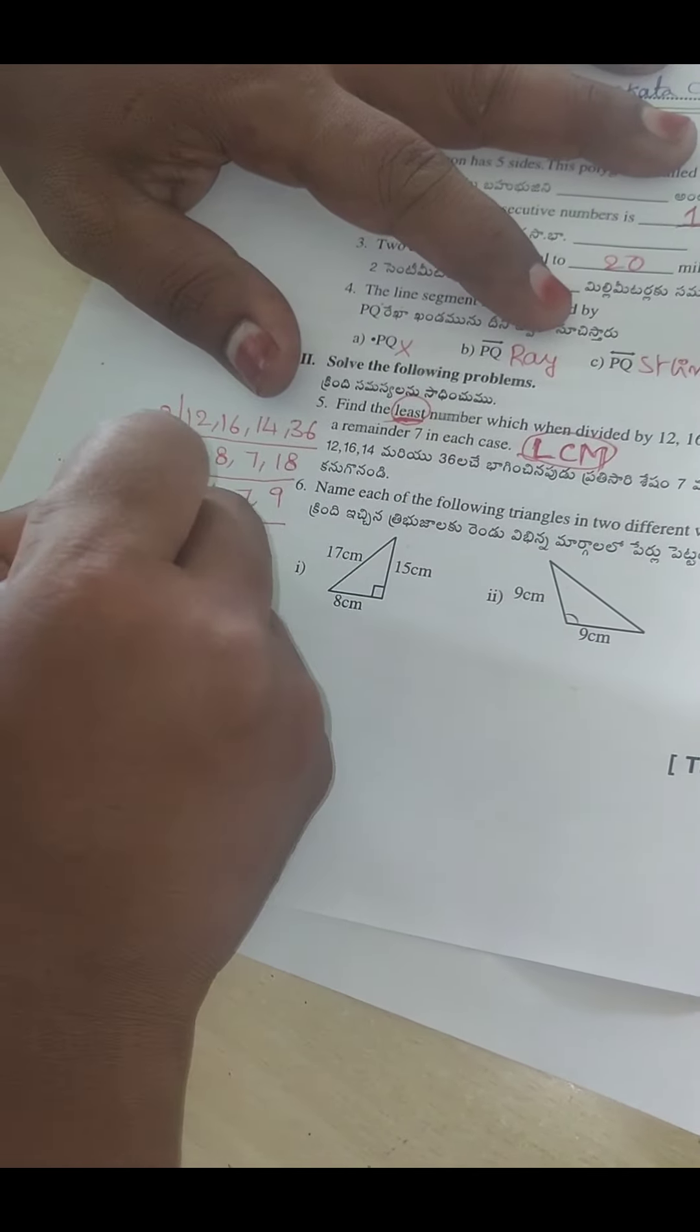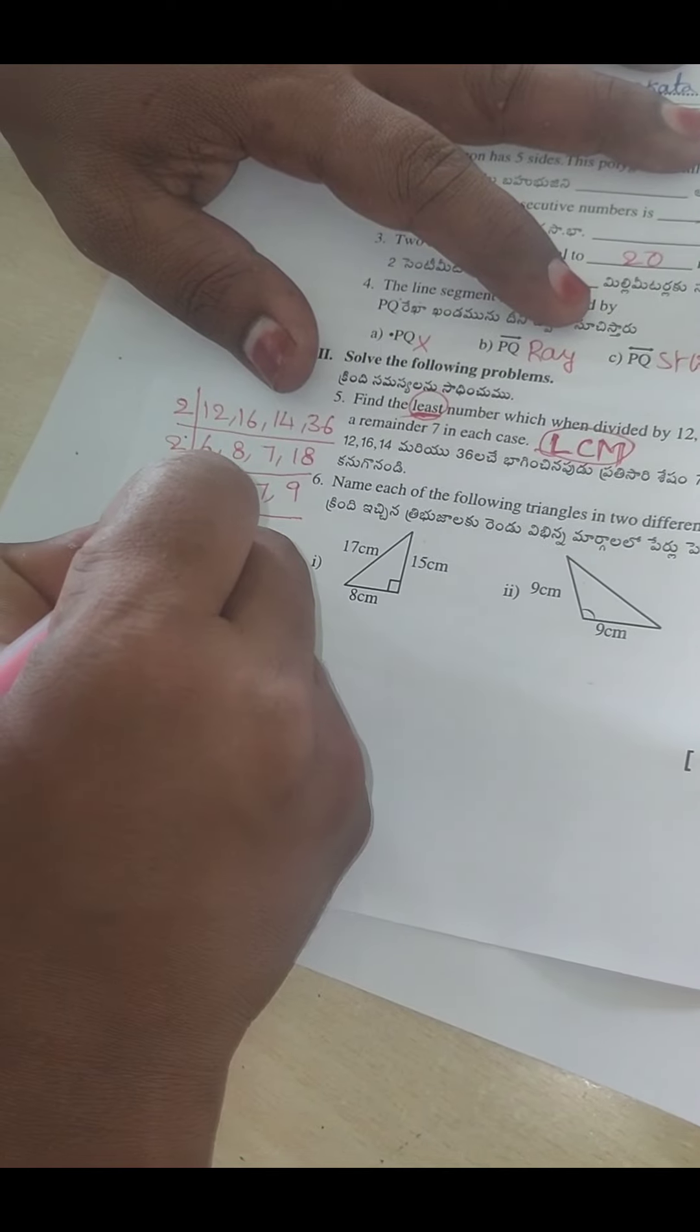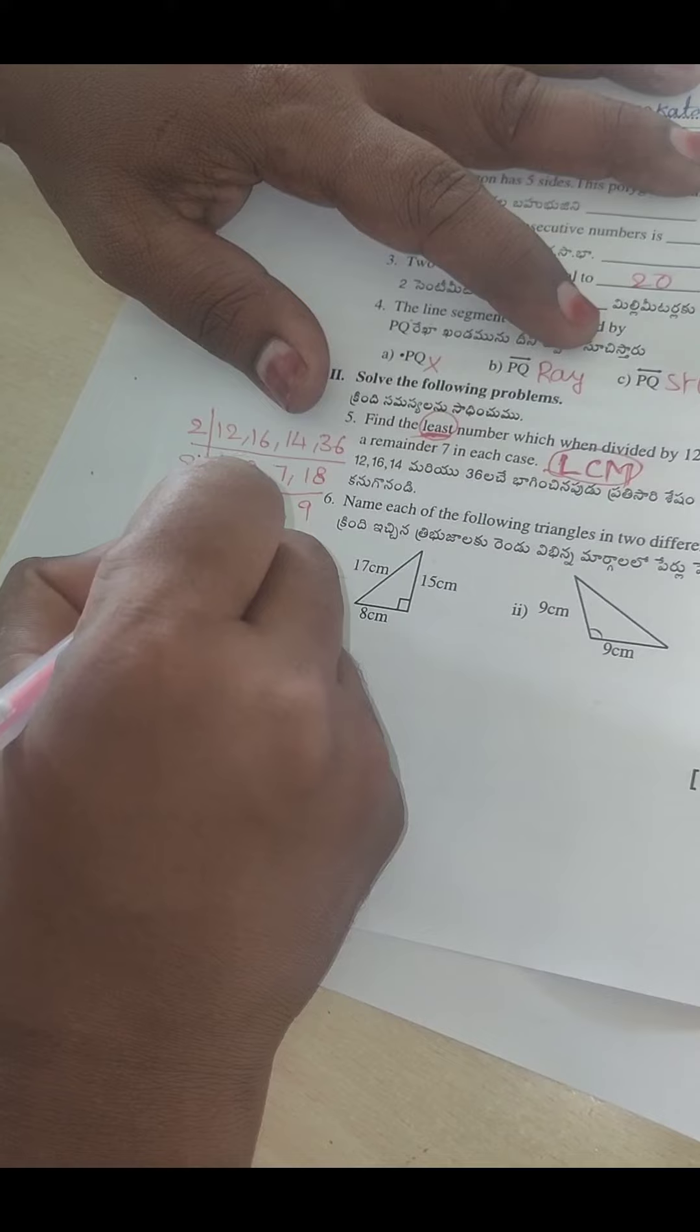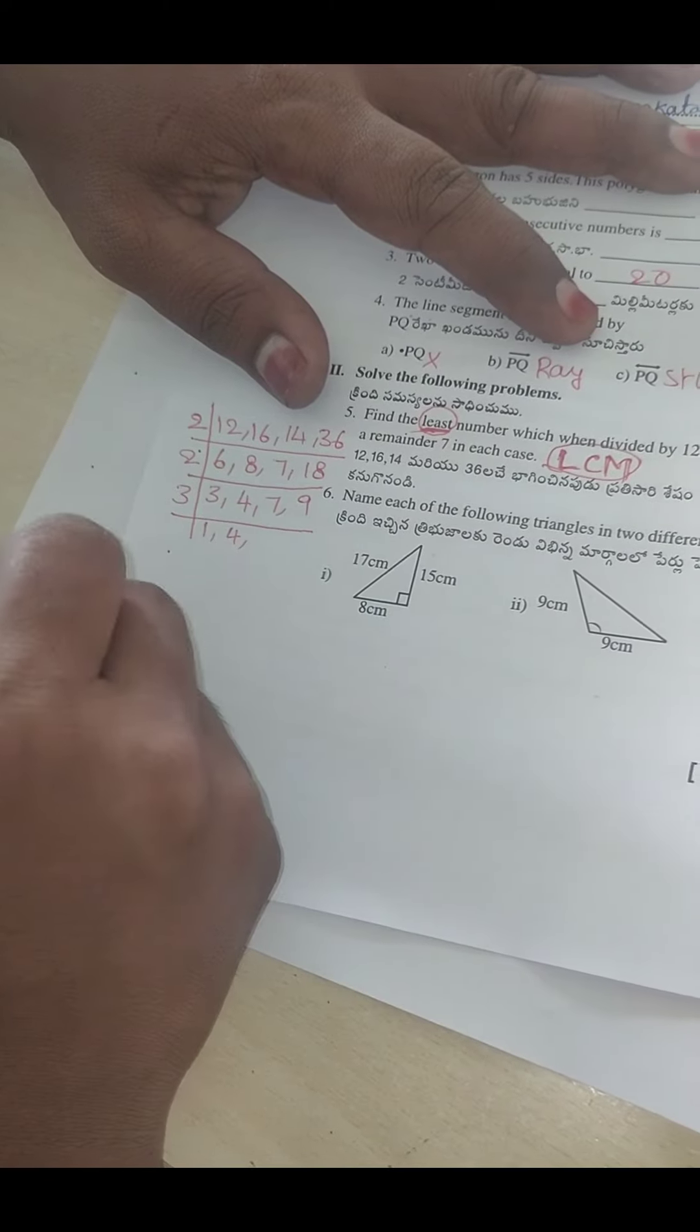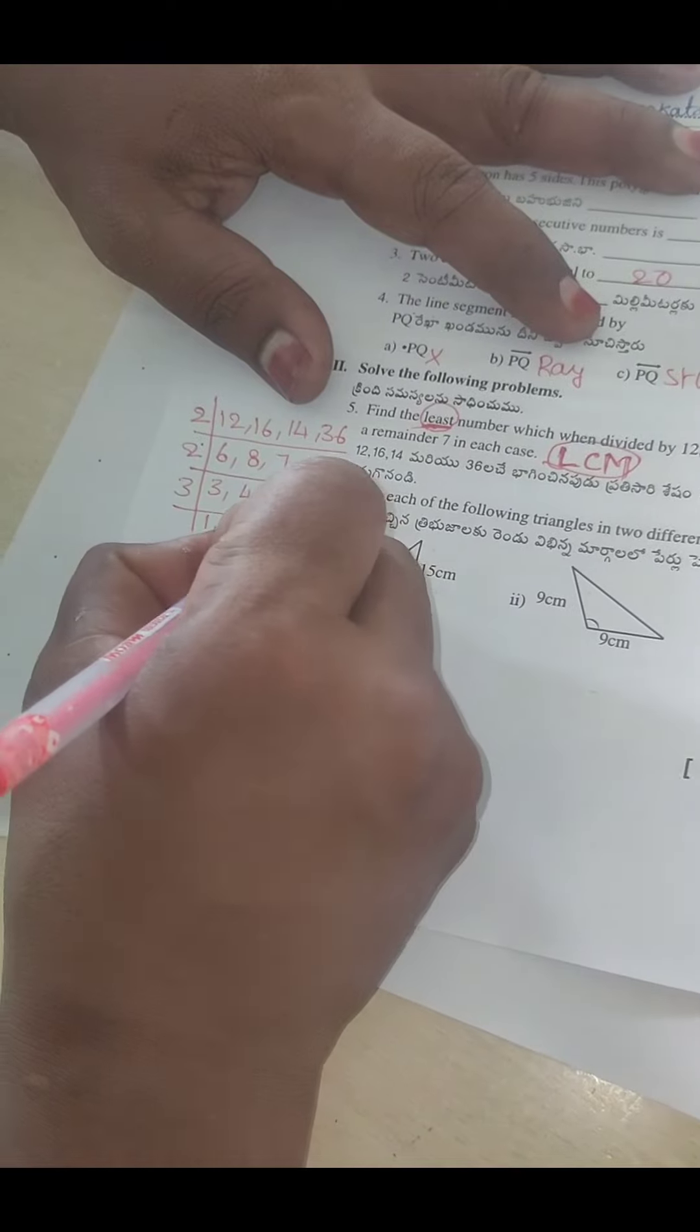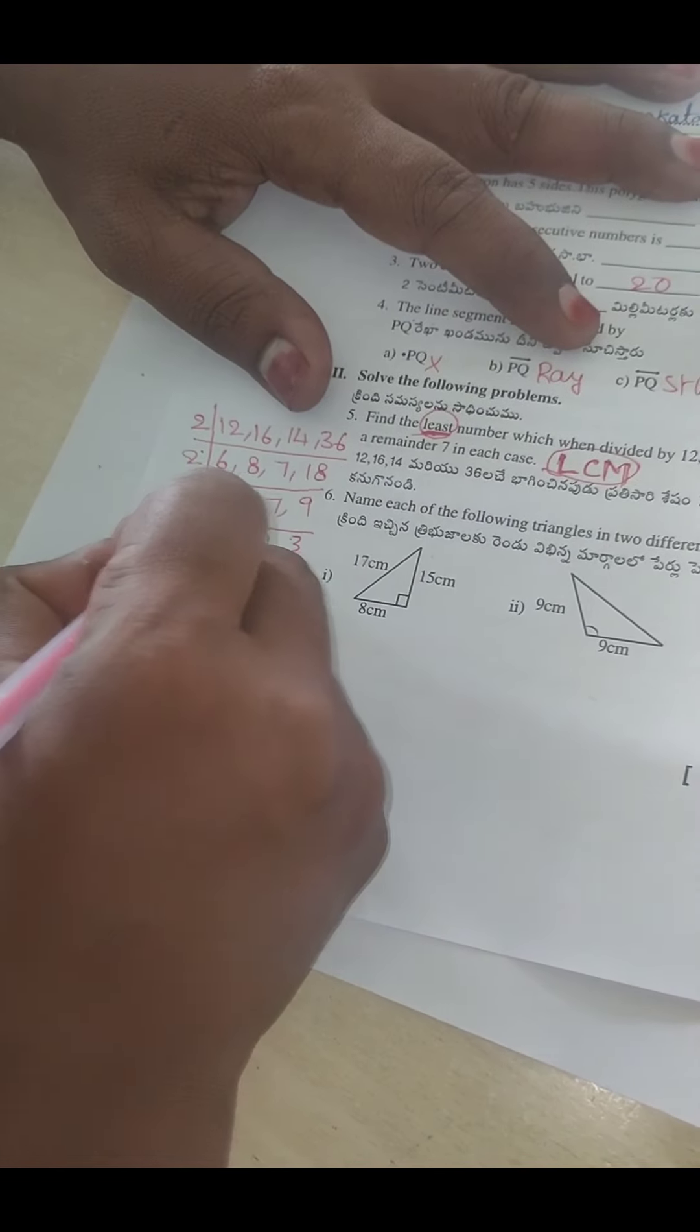Now we can take three tables. Three comes in three one time. Four - there is no 4 in three tables, so just copy number. Again, we can copy seven. Nine comes in three tables three times.